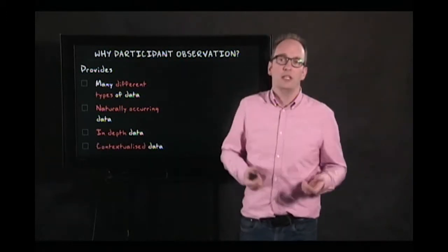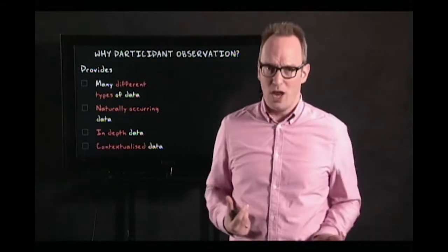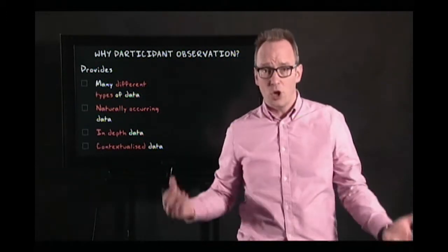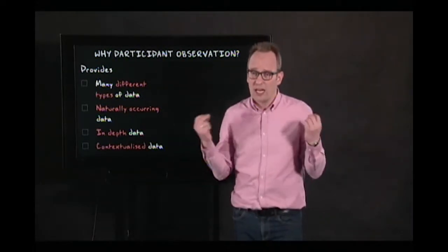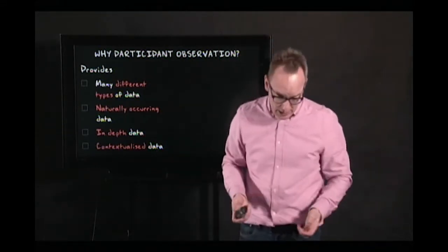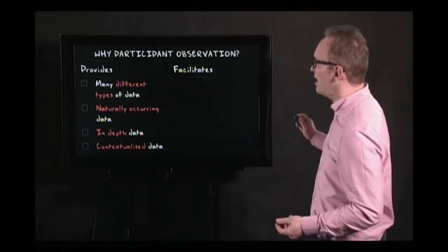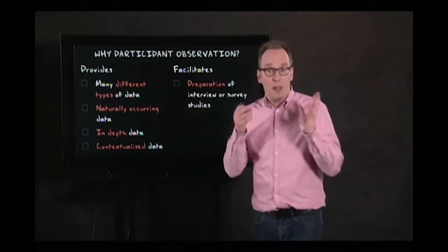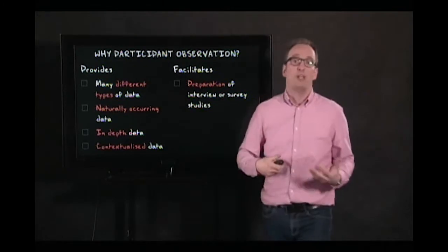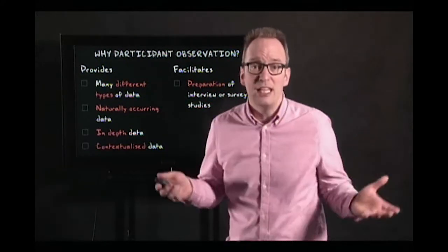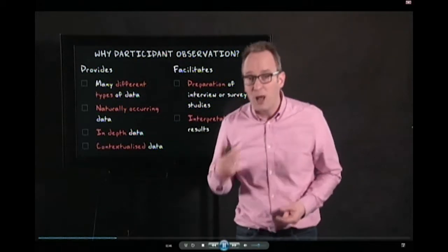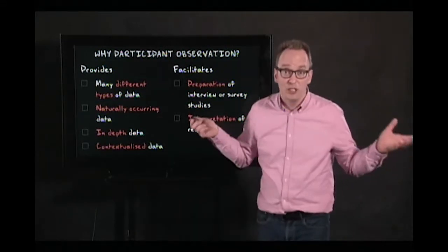The fourth reason is that participant observation provides contextualized data — naturally occurring, in-depth, and also contextualized, within a certain context that becomes clearer the longer you stay, including historical and social context. It also facilitates other methods: when doing participant observation, you learn so much about a group that preparation for an interview or a survey is easier because you've already done a pre-study. It also helps a lot with interpreting survey results. Participant observation is an important — and the coolest — research method.